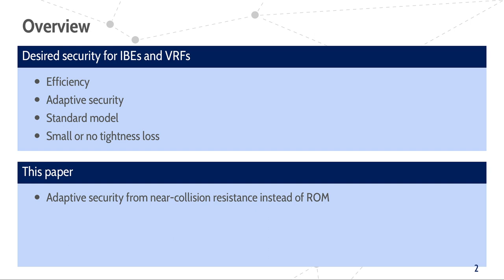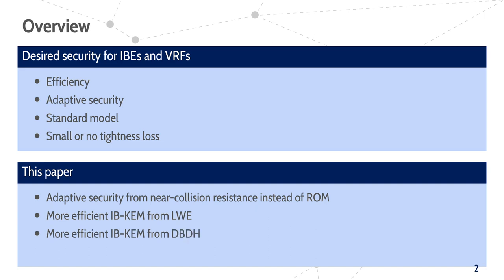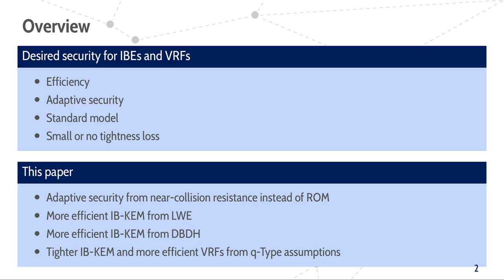We do that by showing how to construct a more efficient IBE scheme from LWE and from the bilinear Diffie-Hellman assumption. Furthermore, we also show how the technique can be used to construct an efficient verifiable random function from the Q-decisional bilinear Diffie-Hellman inverse assumption. Finally, we also show how the technique can be used to prove the IBE scheme by my two co-authors from AsiaCrypt 2018 with very short ciphertext secure with significantly less security loss.